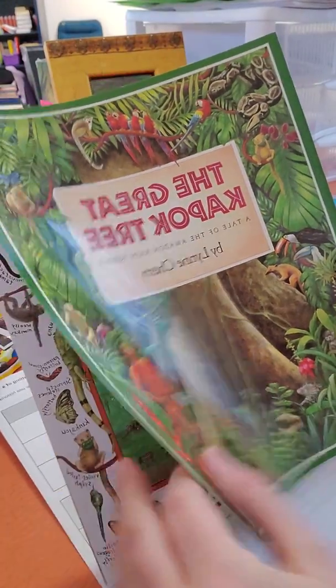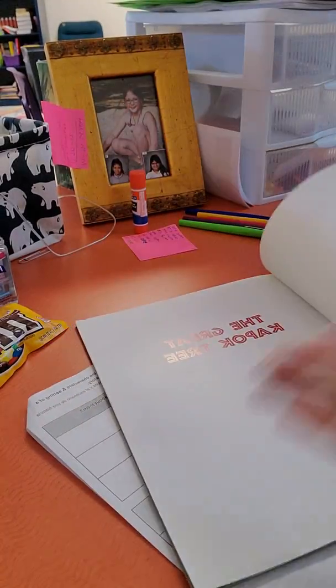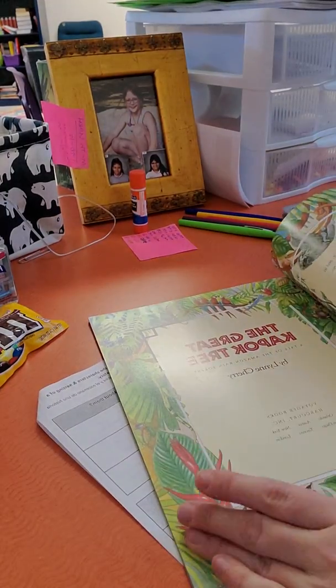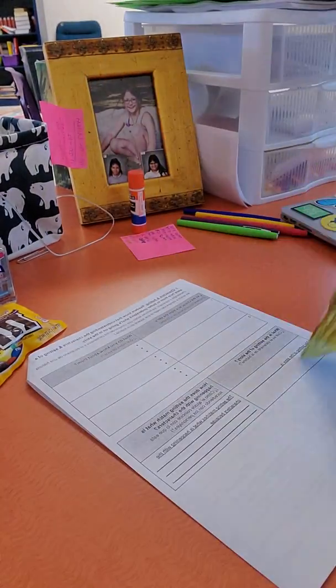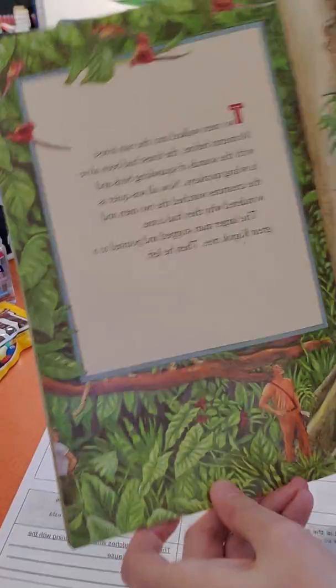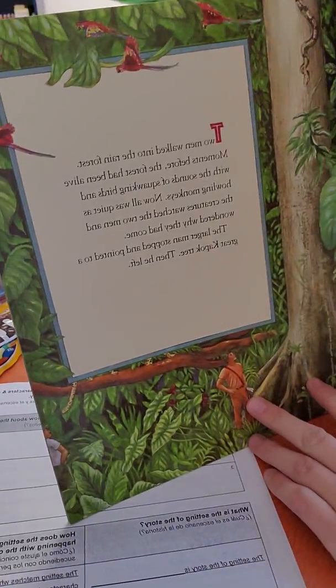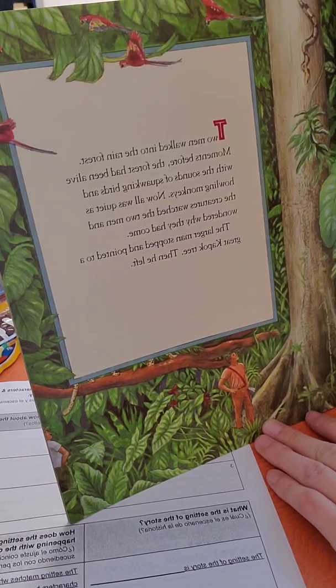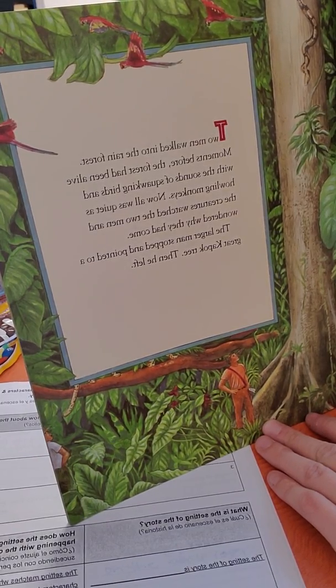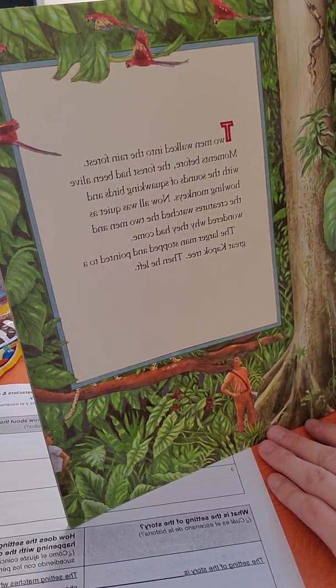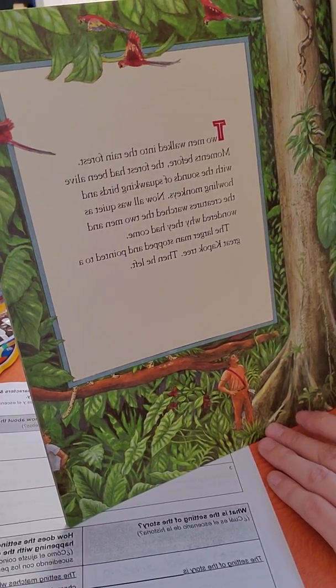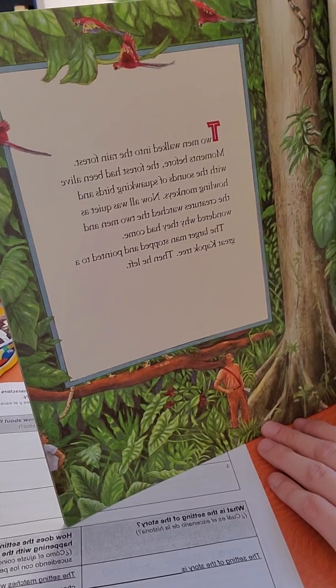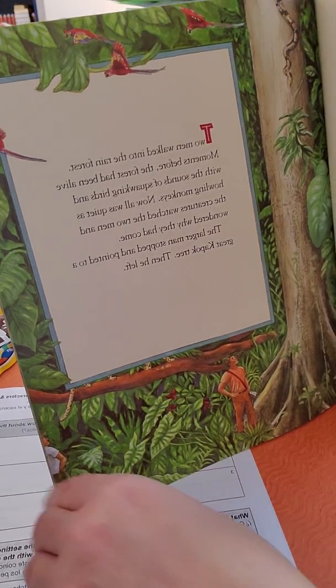So, let's go ahead and get started. The Great Kapok Tree. Two men walked into the rainforest. Moments before, the forest had been alive with the sounds of squawking birds and howling monkeys. Now, all was quiet as the creatures watched the two men and wondered why they had come. The larger man stopped and pointed to a Great Kapok Tree. Then he left.